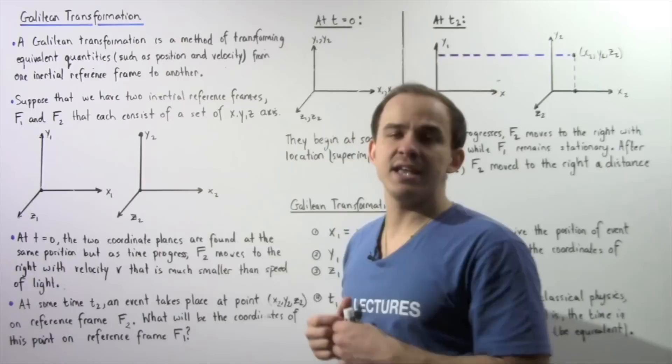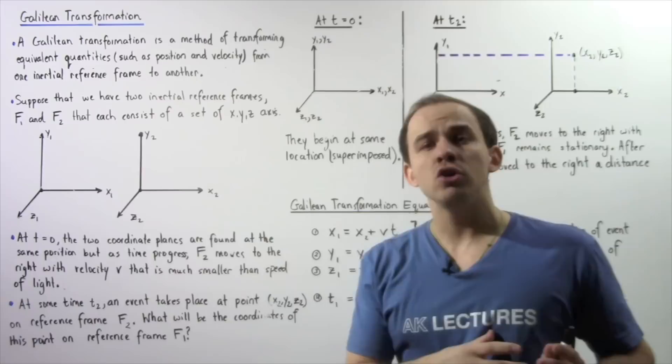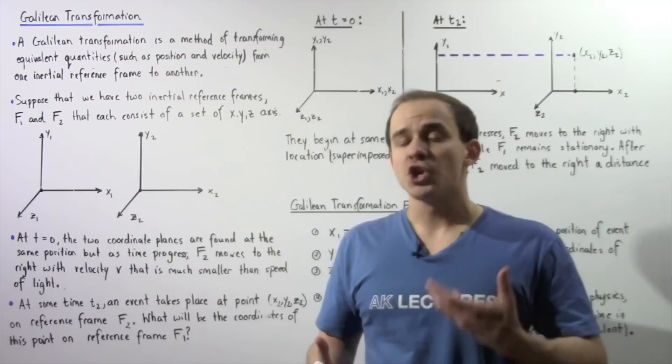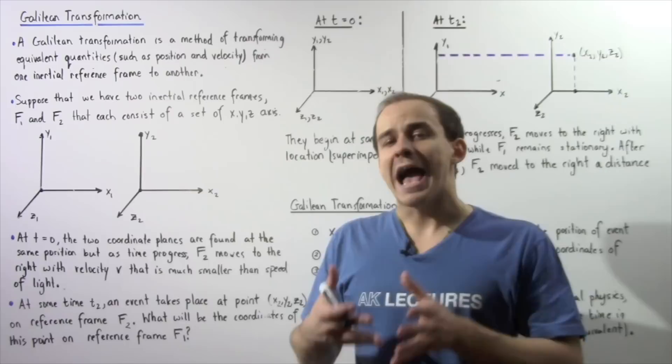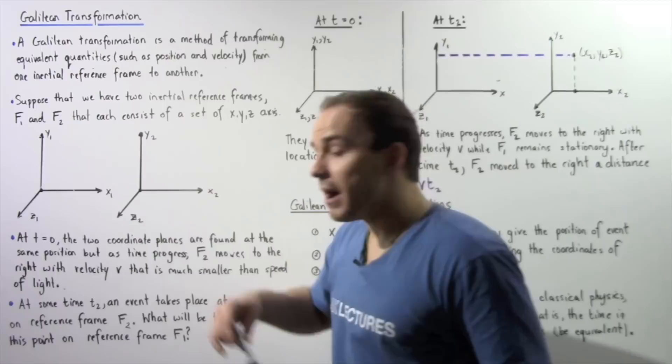As time progresses, the car begins to move to the right along the X axis, and that means the entire frame F2 also moves to the right. We assume the velocity of the car is very low compared to the speed of light, so we're dealing with classical physics. In classical physics, time is an absolute quantity — time is the same in both reference frames.